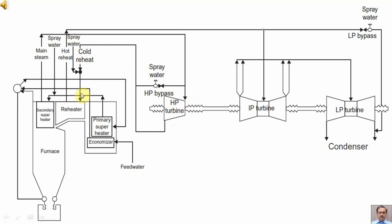The cold reheat goes back to the reheater section of the boiler. Before entering the reheater, the cold reheat is sprayed with water to control the temperature of the hot reheat, making it comparable with the main steam temperature. The steam entering the reheater is cold reheat, and the steam coming out of the reheater section is hot reheat.